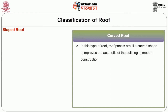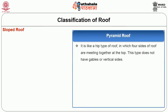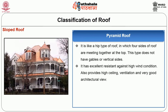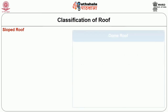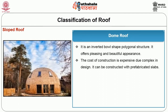Curved roof: roof panels are curved in shape and improve the aesthetics of the building. In modern construction, the curved roof is durable when the roof slope is less in high wind areas. Pyramid roof is like a hip type roof in which all four sides meet together at the top; it does not have gables or vertical sides. It has excellent resistance against high wind conditions, provides high ceiling ventilation and a very good architectural view. Dome roof is an inverted bowl-shaped polygonal structure offering a pleasing and beautiful appearance. The cost of construction is expensive due to complex design, but it can be constructed with prefabricated slabs.